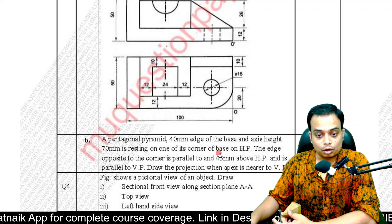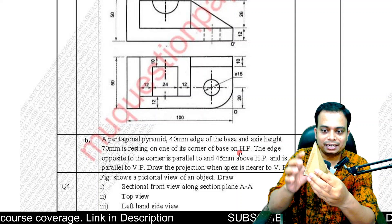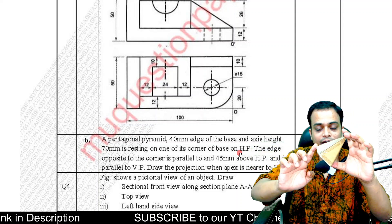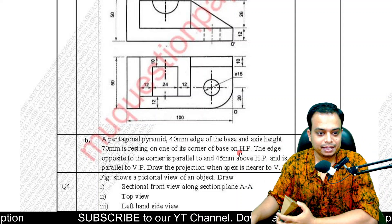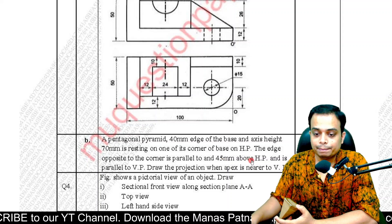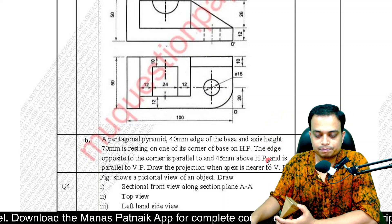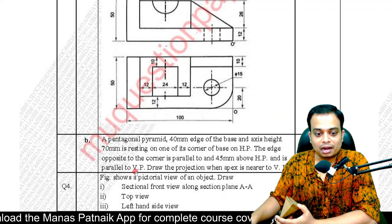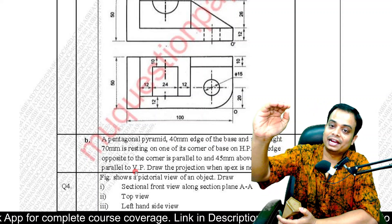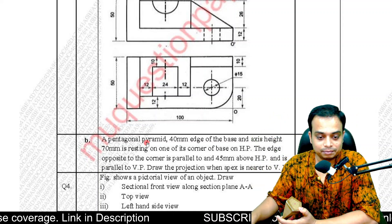The solid is resting on one corner of the base on HP - any one corner you can choose. The entire solid is resting on this corner, which essentially means the remaining four corners will be up in the air. The edge opposite to that corner is parallel to HP and 45mm above HP. It is parallel to HP at the same time it is at a height of 45 millimeters.